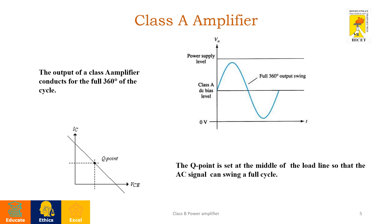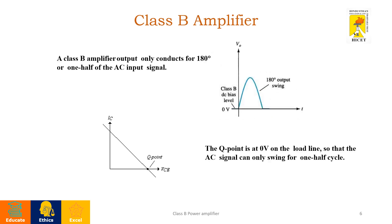Now we will see in somewhat detail about the Class A amplifier. The Class A amplifier conducts for the entire 360 degrees of the input signal, so its output will be from 0 to 360 degrees. For that conduction, the Q-point will be located at the center of the load line so that the AC signal can swing for the full cycle.